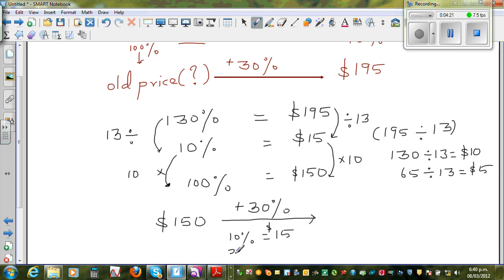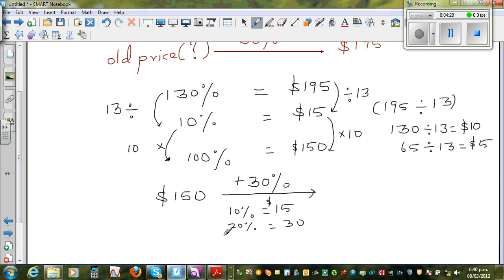So 20% is 30. So if you know 10% and 20%, you can find 30%, which is $45.